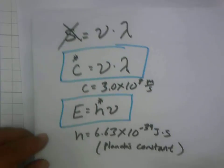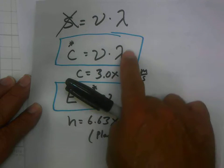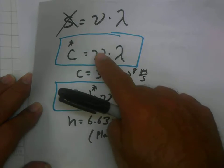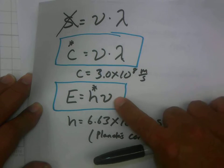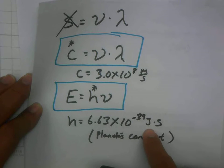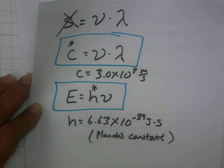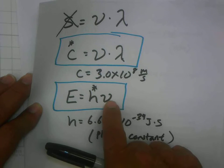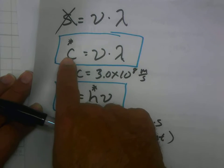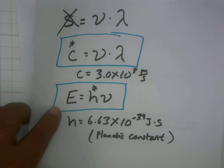We are given energy and asked for wavelength — they don't appear in the same equation. But what appears in both equations is frequency. So we can use energy to calculate the frequency. Remember that h is a constant, so if you're given E and you have h, you can figure out frequency. Then once you have frequency, you can plug into the second equation with the speed of light c to get the wavelength.